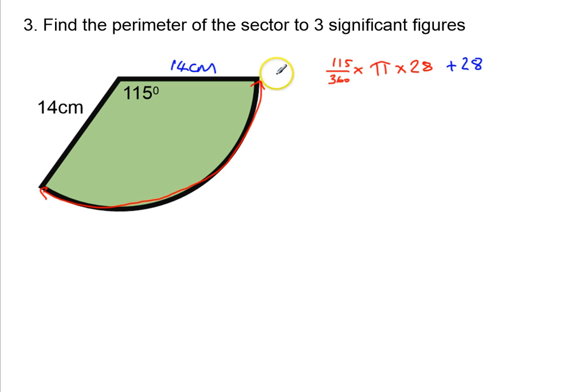So my perimeter is going to be equal to this calculation here. This bit here is going to be the arc length: 115/360th times pi times the diameter. And I'm going to add on this 14 and this 14 over here. So that's where the plus 28 comes from.